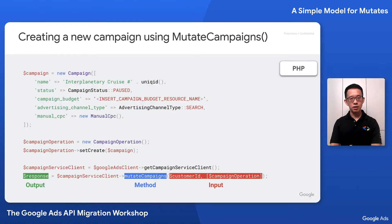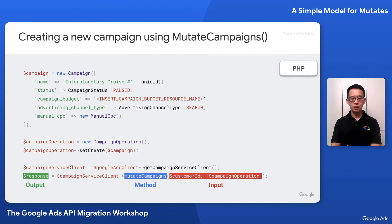Let's take a quick look at an example of creating a new campaign using the mutate campaigns method with the PHP client library. First, we create a new campaign and set properties like name, status, campaign budget, advertising channel type, and a bidding strategy — in this case, manual CPC. Then we create a campaign operation and set its create property to that campaign. Finally, we get a campaign service client and call the mutate campaigns method, supplying the customer ID and a list of campaign operations, and get back the response.